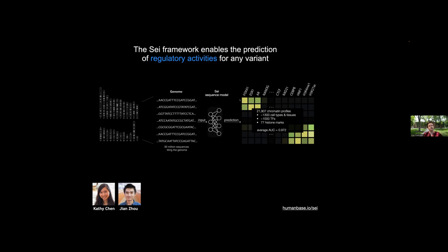What the model is doing is predicting that in a particular sequence, there will be binding by FOXA1, ESR1, AR1, but not NANOG, CTCF, etc. This is done over about 22,000 chromatin profiles spanning 1,300 different cell types, about 1,000 different transcription factors, and 77 histone marks, with very high accuracy — average accuracy of about 0.972. This gives you basically in silico ChIP-seq: for every place in the genome at 100 base pair steps, a prediction for ChIP-seq over those 22,000 different chromatin measurements.